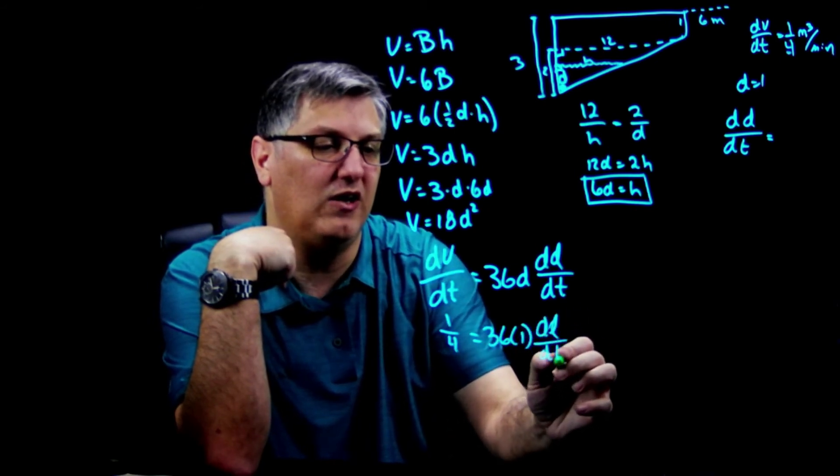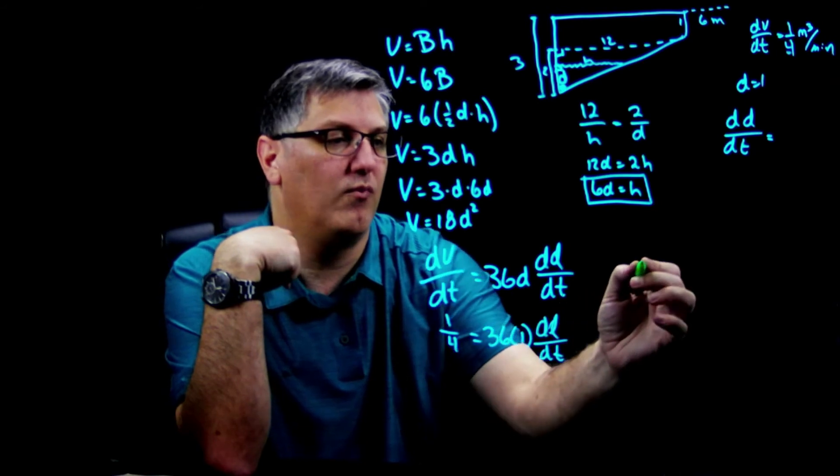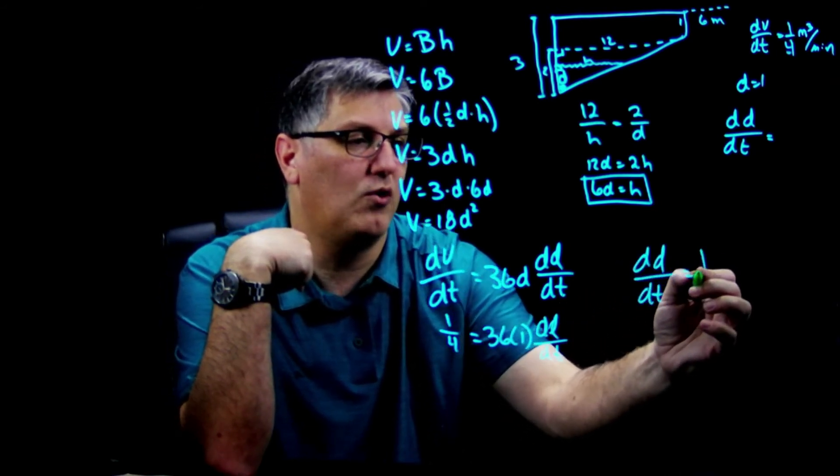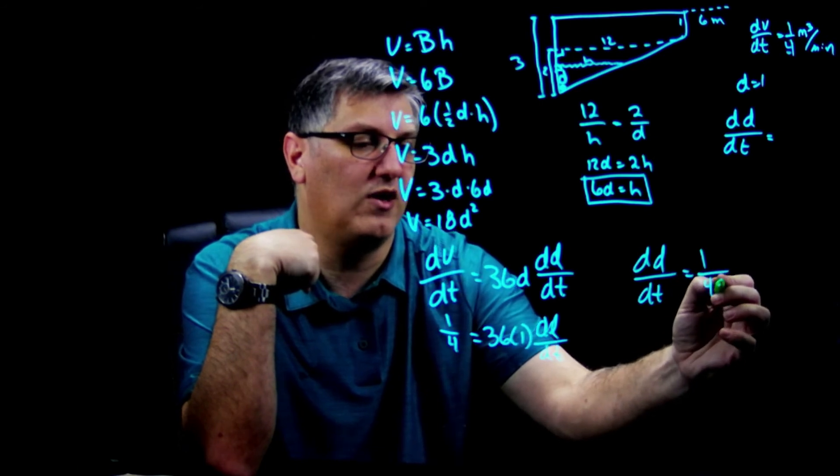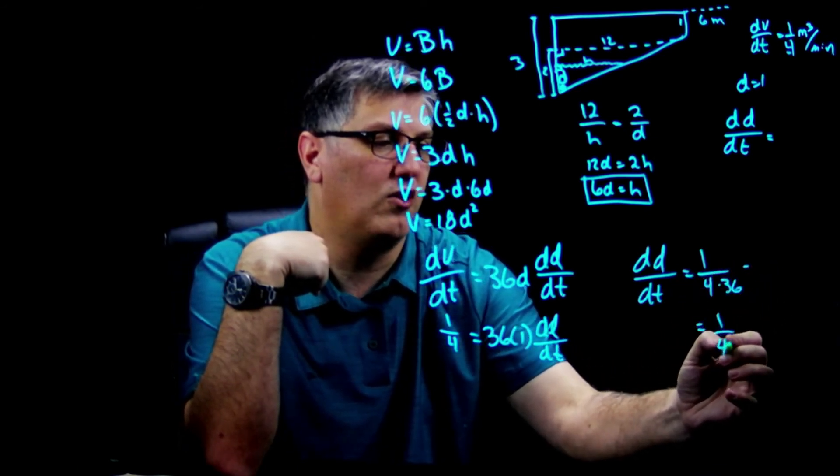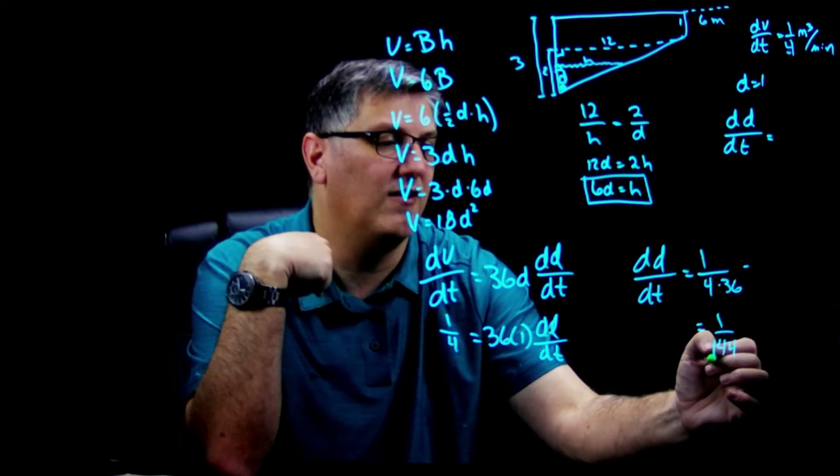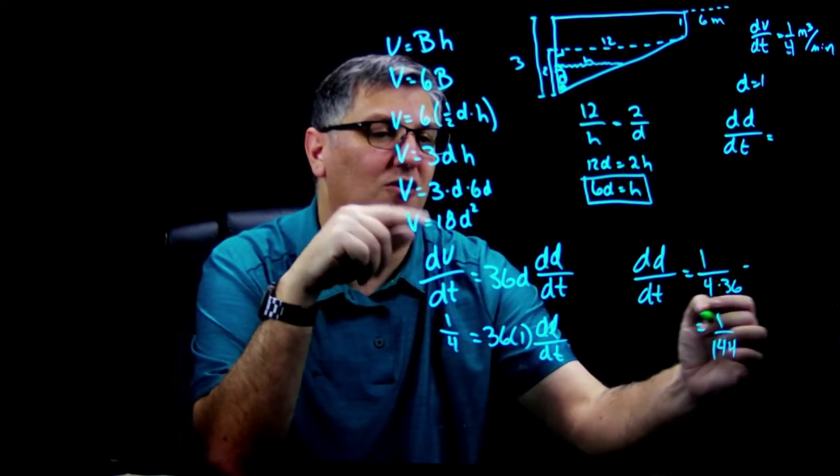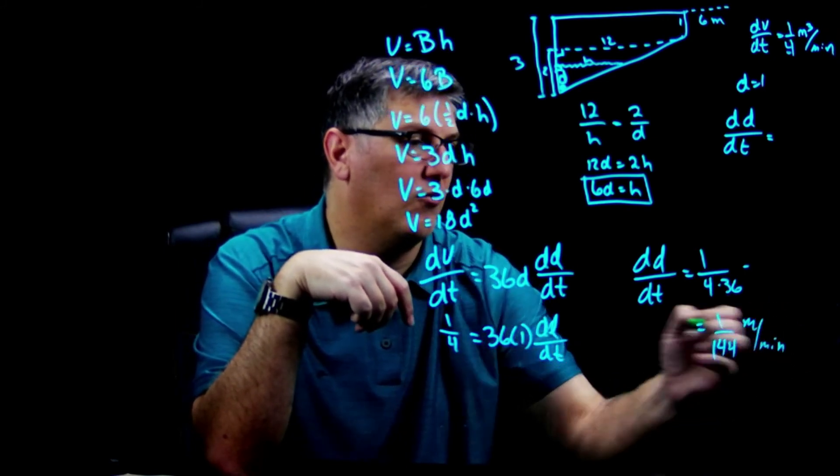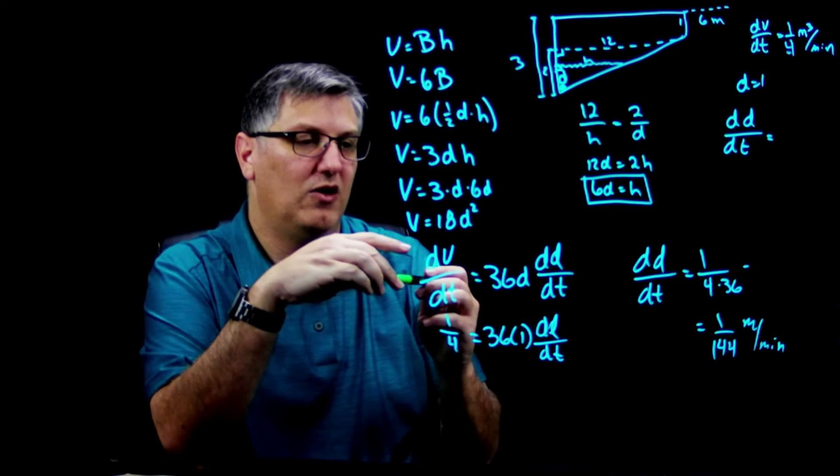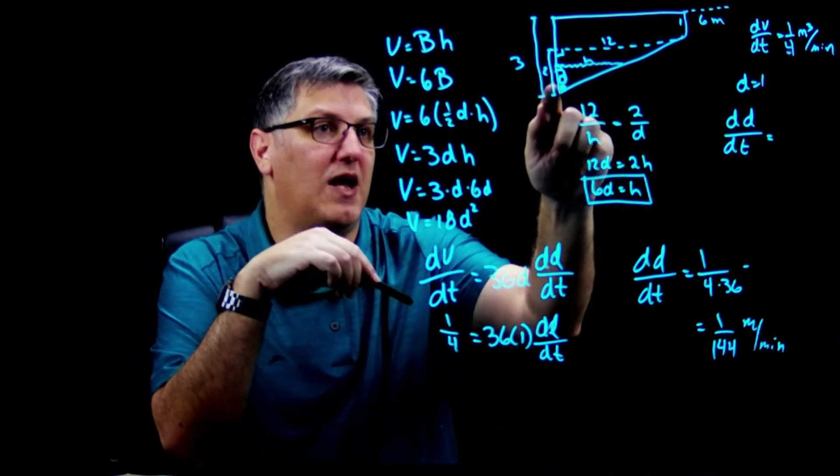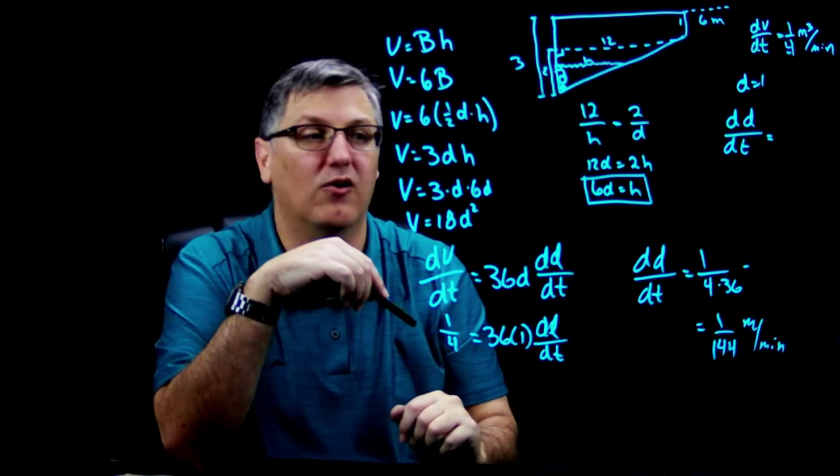When I plug everything in, I got dV/dt was 1/4 = 36 × dd/dt, which gives me dd/dt = 1/144. This is going to be meters per minute once you work out all the units. So that's how fast it's changing when this depth is 1 meter - it's changing at 1/144 meters per minute.